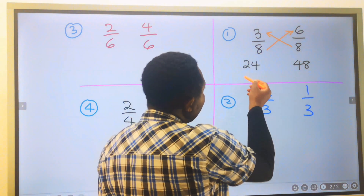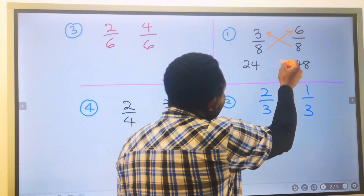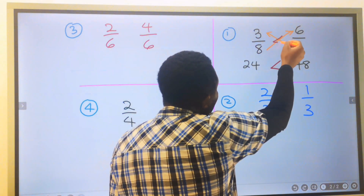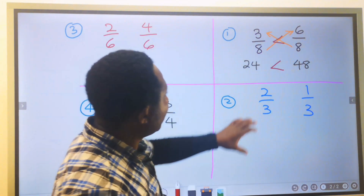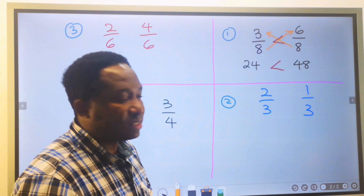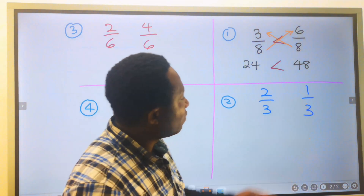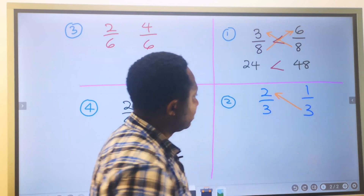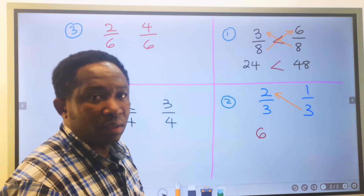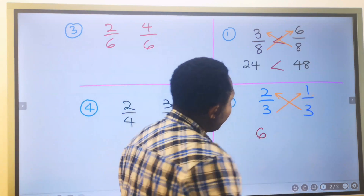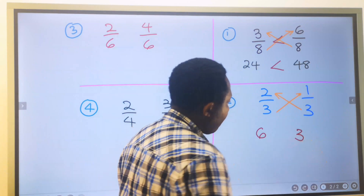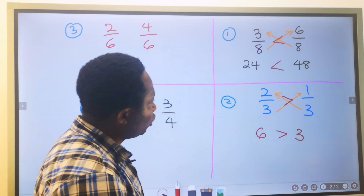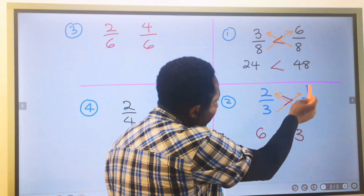48 is greater than 24, and we use the inequality sign to show that six over eight is greater than three over eight. Next, for two over three and one over three: two times three gives you six, and three multiplied by one gives you three. Six is greater than three, showing that two over three is greater than one over three.